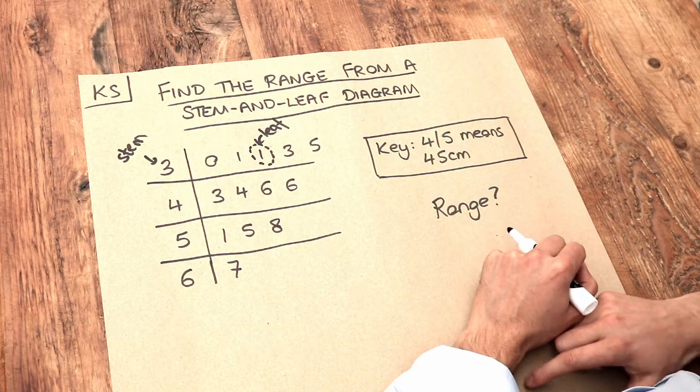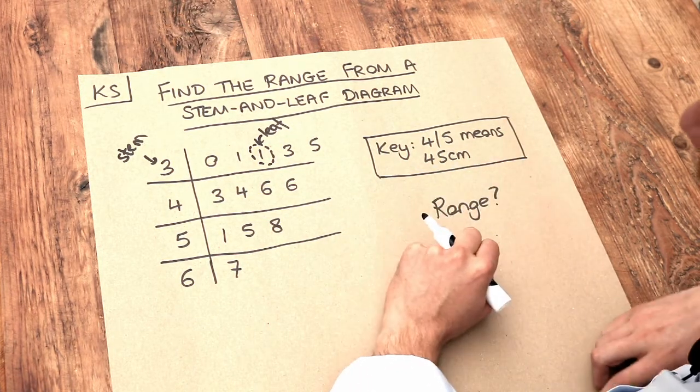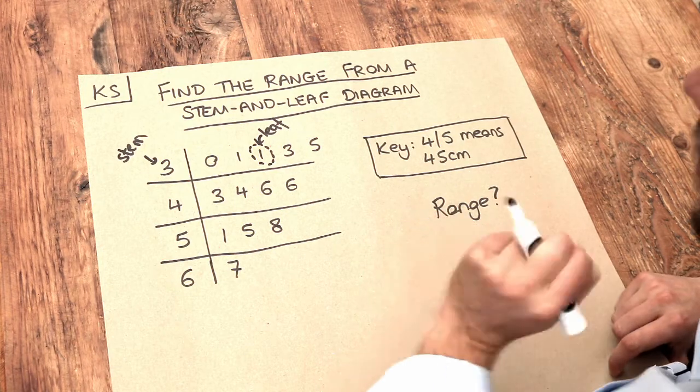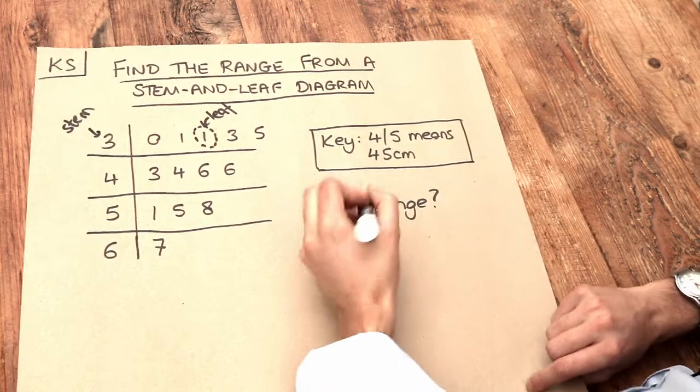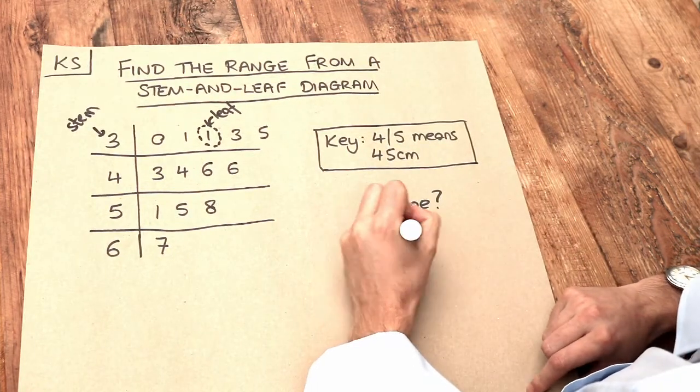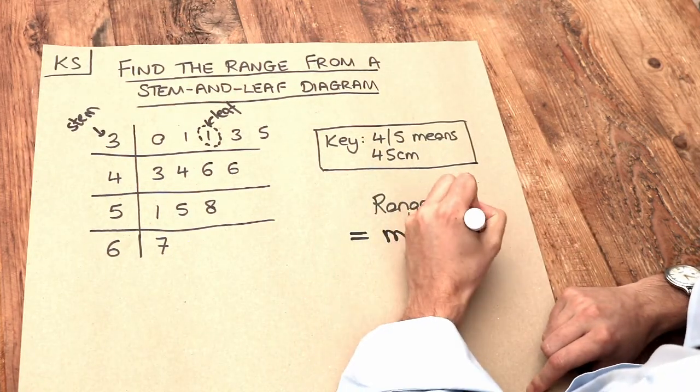Now we want to find the range. Because the values in a stem-and-leaf diagram are conveniently ordered, it's instantly clear what the smallest and largest values are. Remember, range is just the maximum value minus the minimum value.